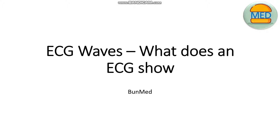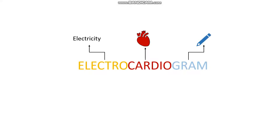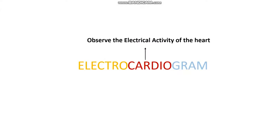Let's have a look at what an ECG actually is. An ECG stands for an electrocardiogram — electro refers to electricity, cardio refers to the heart, and gram refers to a visual depiction of something. Therefore, an electrocardiogram allows us to observe the electrical activity of our heart.